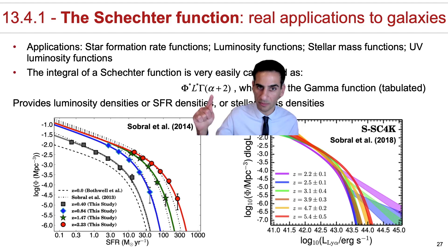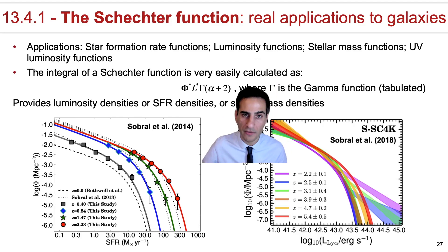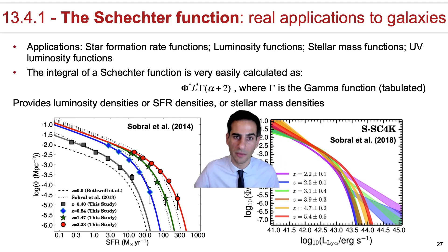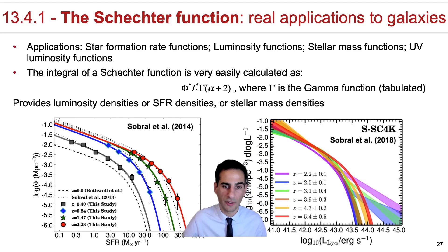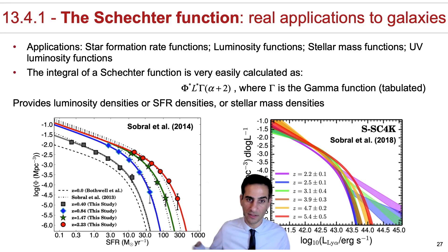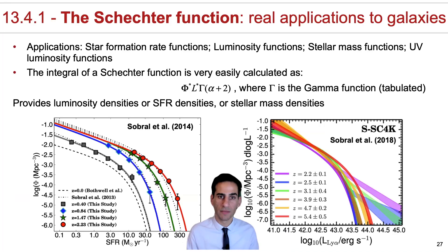And essentially if you multiply the value of the gamma function with alpha plus 2 in these parameters, you can actually get, for example, the number of galaxies in the universe or the number density, or for example, the star formation rate density of the universe. And we'll come back to this in section 14, where I'll explain this even further.